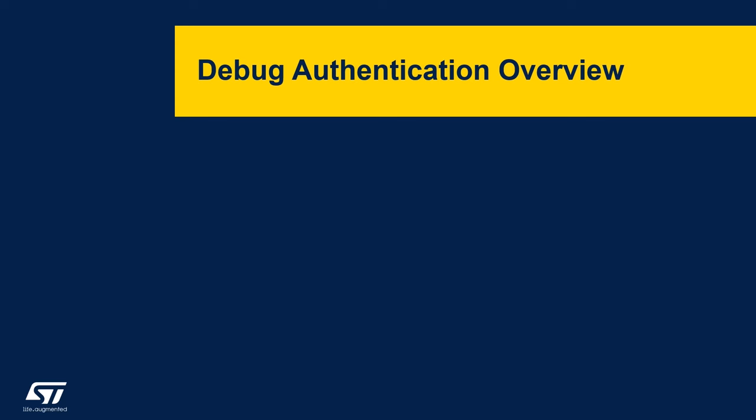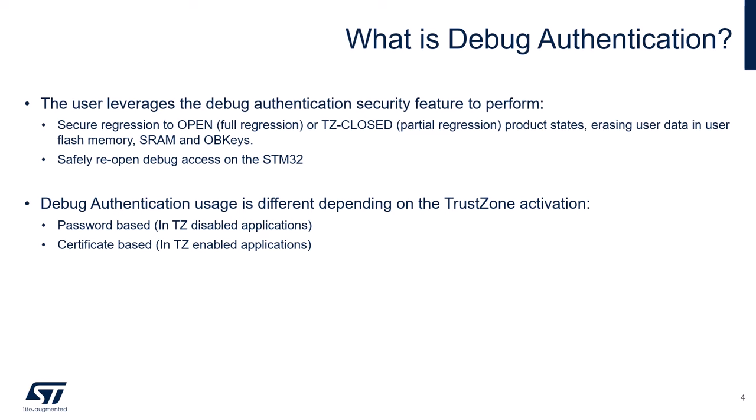Let's begin with an overview of debug authentication. Debug authentication basically allows the user to perform a secure regression to open state, also called full regression, or to a trust zone closed state, also called a partial regression. Additionally, it also provides an option to reopen debug access on the STM32 device securely.